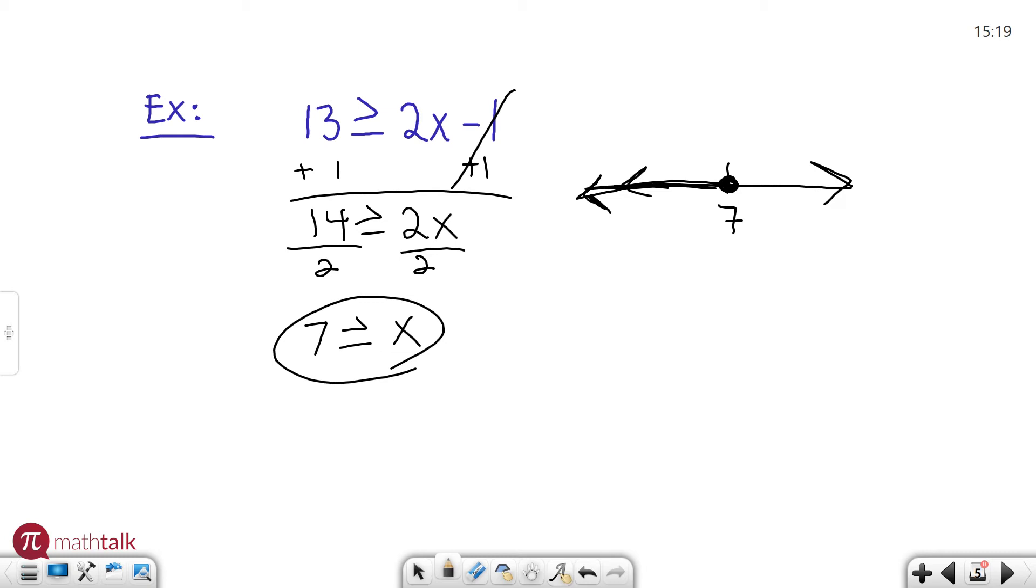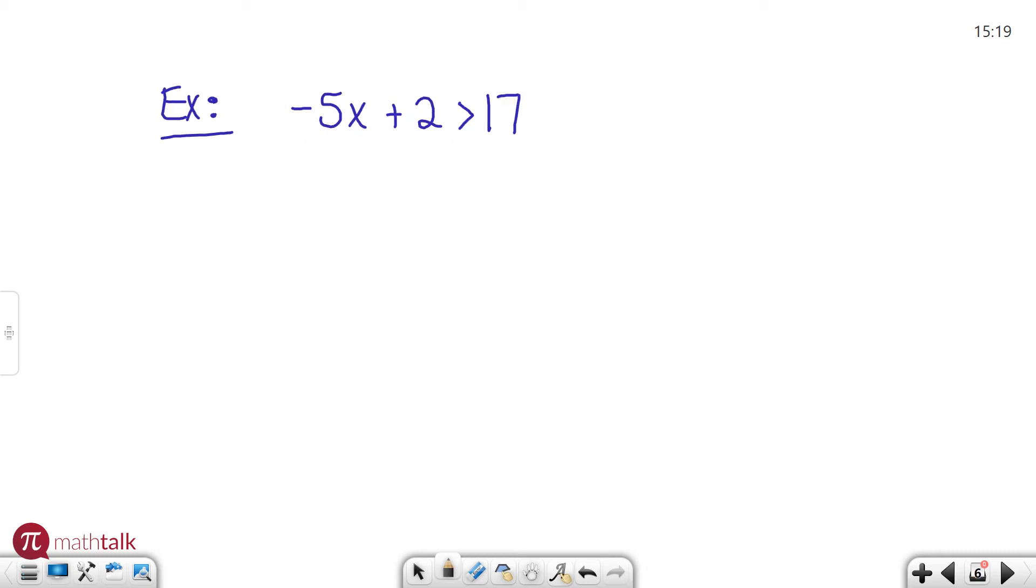I have one more example I want to show you and then we will go ahead and end this video. So negative 5x plus 2 is greater than 17. Let me get rid of this 2. That's gone. I get negative 5x is greater than 15. Now in one of my steps I said if your last step to solving this is dividing or multiplying by a negative number you have to switch the symbol. In this case I'm dividing by negative 5. So that means I have to switch the direction of my symbol. So instead of x is greater than this number it's x is less than this number. In this case negative 3.